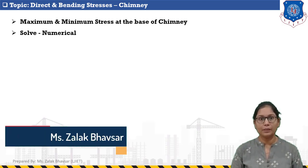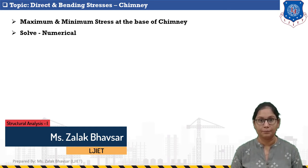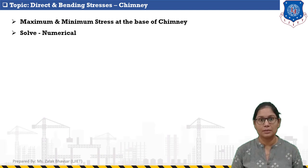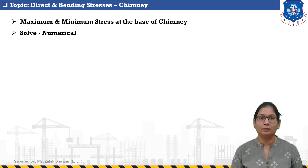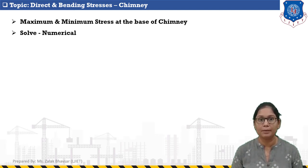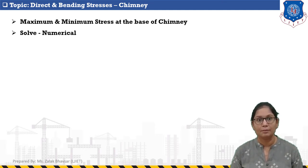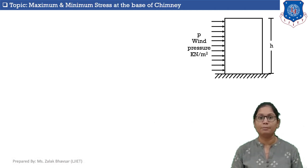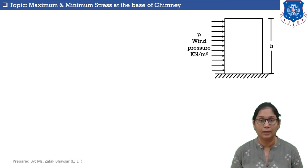In this session we will discuss direct and bending stresses in a chimney. In previous sessions we discussed direct and bending stresses in structures such as columns, dams, and retaining walls. Now we will discuss direct and bending stresses in a chimney. We will start with the steps needed to calculate maximum and minimum stresses at the base of the chimney, and then we will solve a numerical. We need to follow a total of five steps.